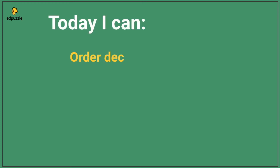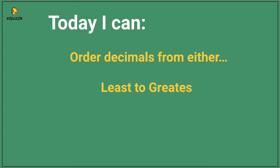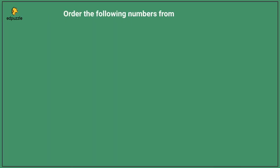Today we are learning how to order decimals from either least to greatest or greatest to least. First, let's order the following numbers from least to greatest: 4.562, 4.56, 4.558, and 4.652.